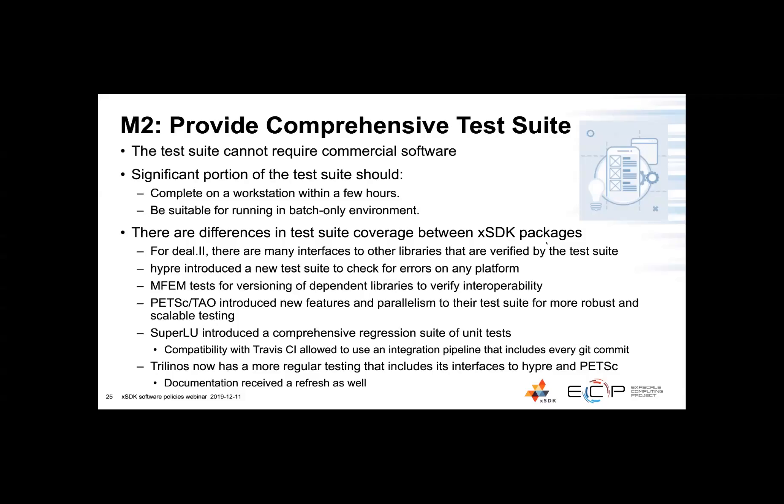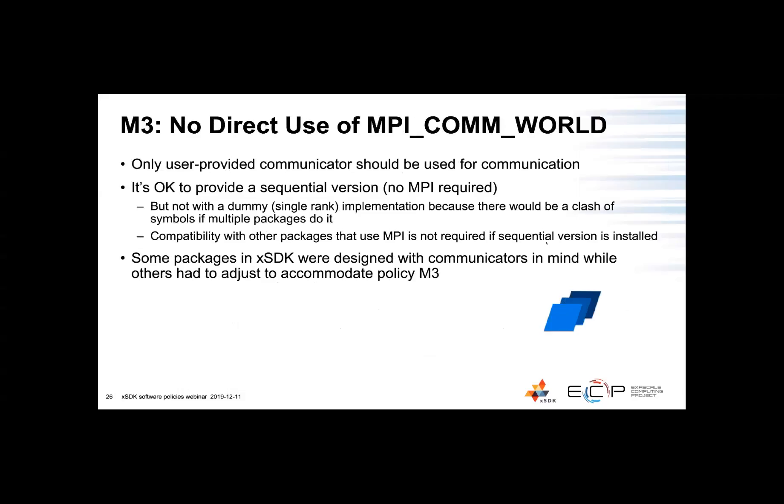Moving on to mandatory policy number three. We require for compatibility that packages will not directly use MPI_COMM_WORLD in the code. Only user-provided communicators should be allowed. It is possible and allowed to compile and install a sequential version of the package. However, in such cases, packages are not allowed to have a scaled-down version of MPI with only a single rank in the communicator because the package could potentially be mixed with other packages compiled in a parallel way. If such limited functionality is provided, it should be namespaced to the package specifically.